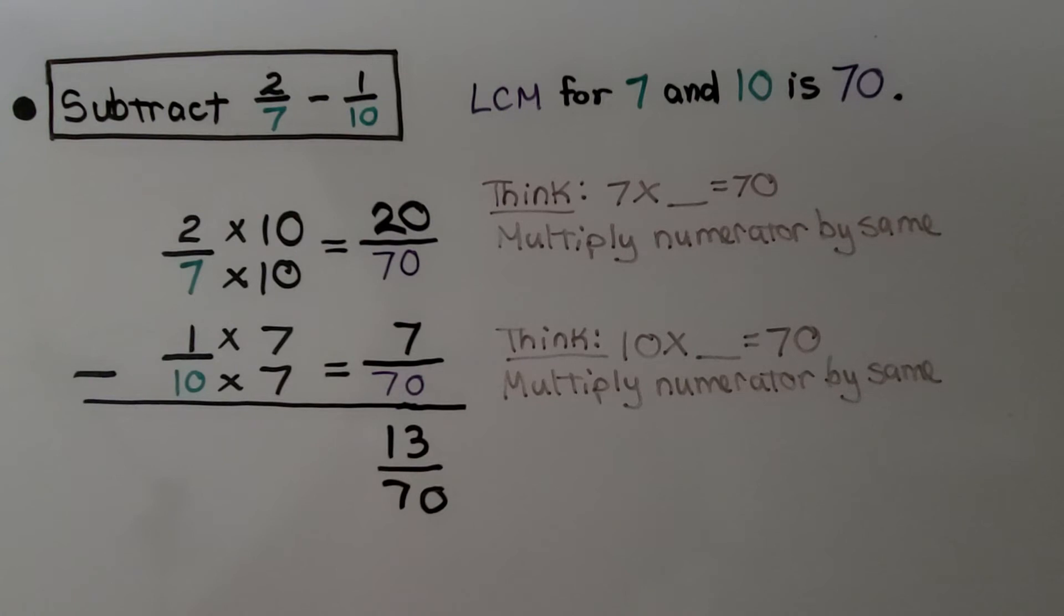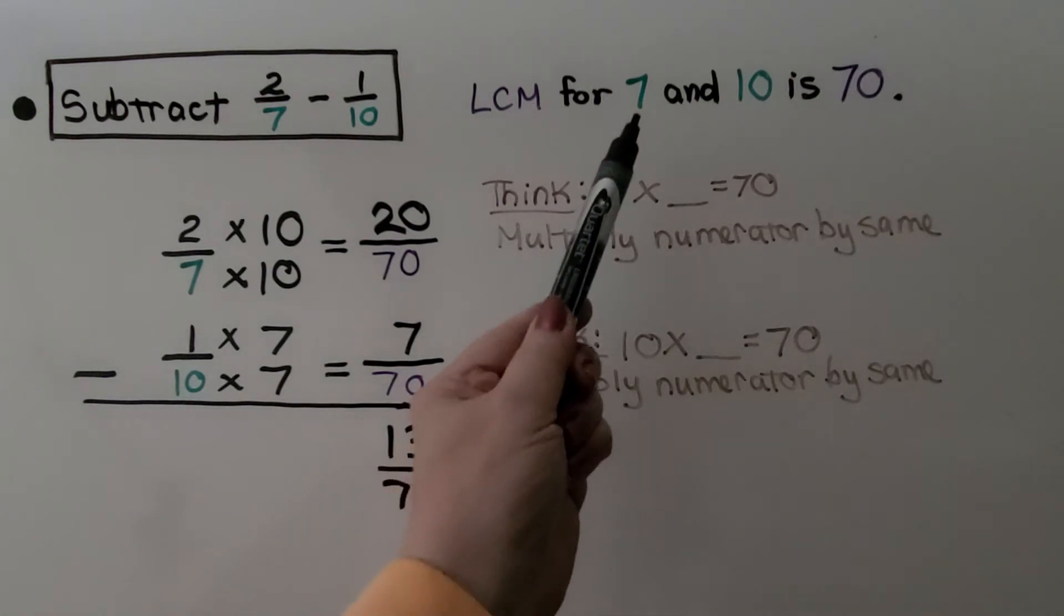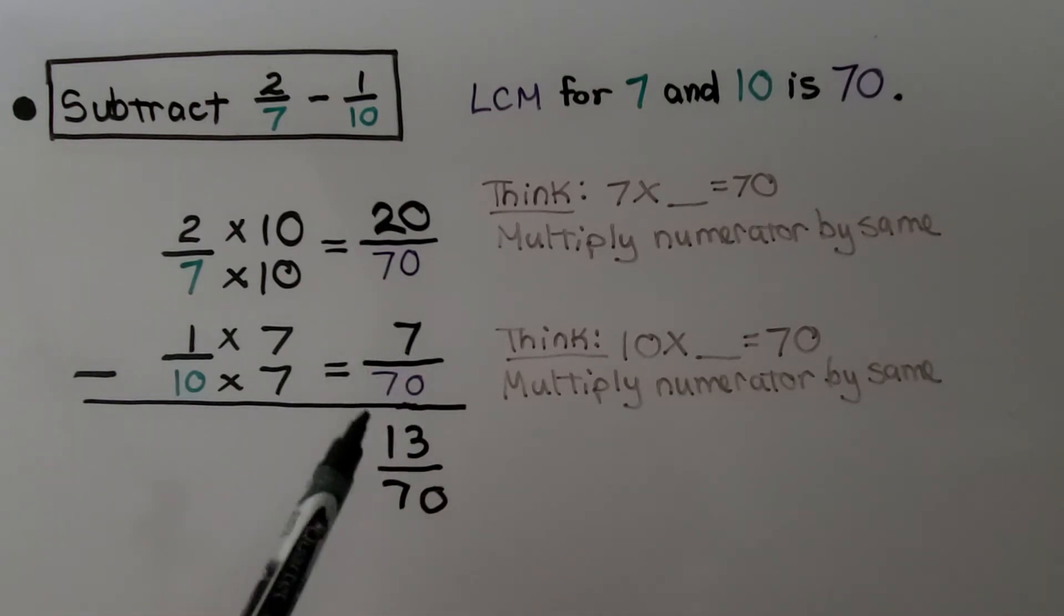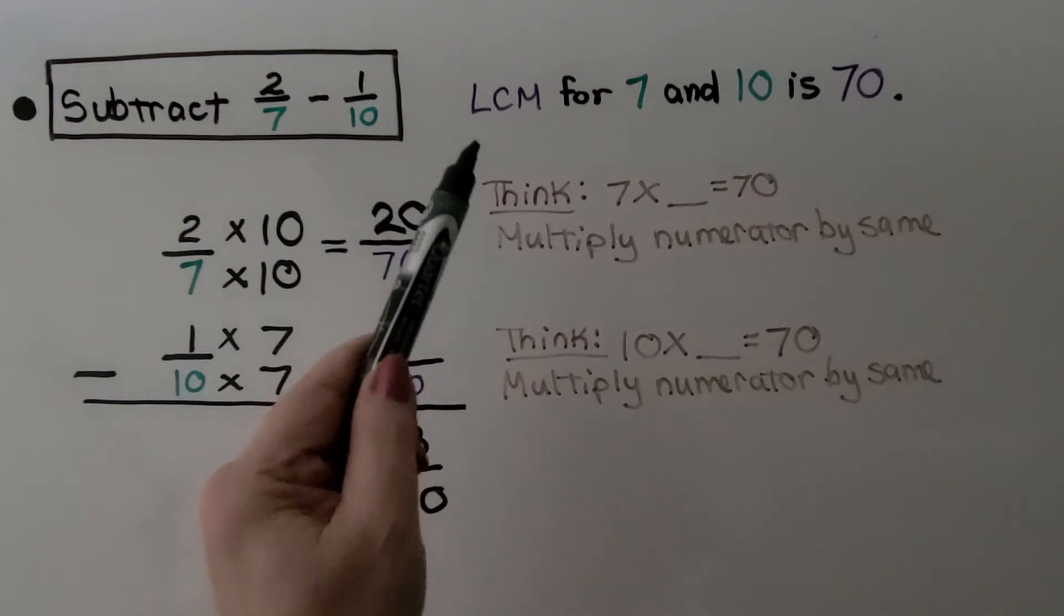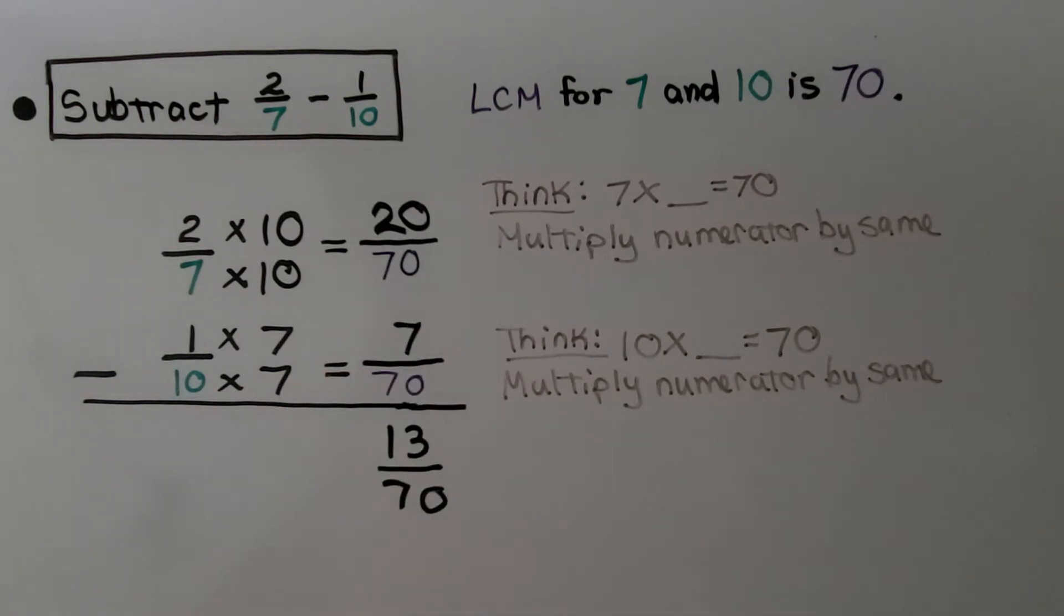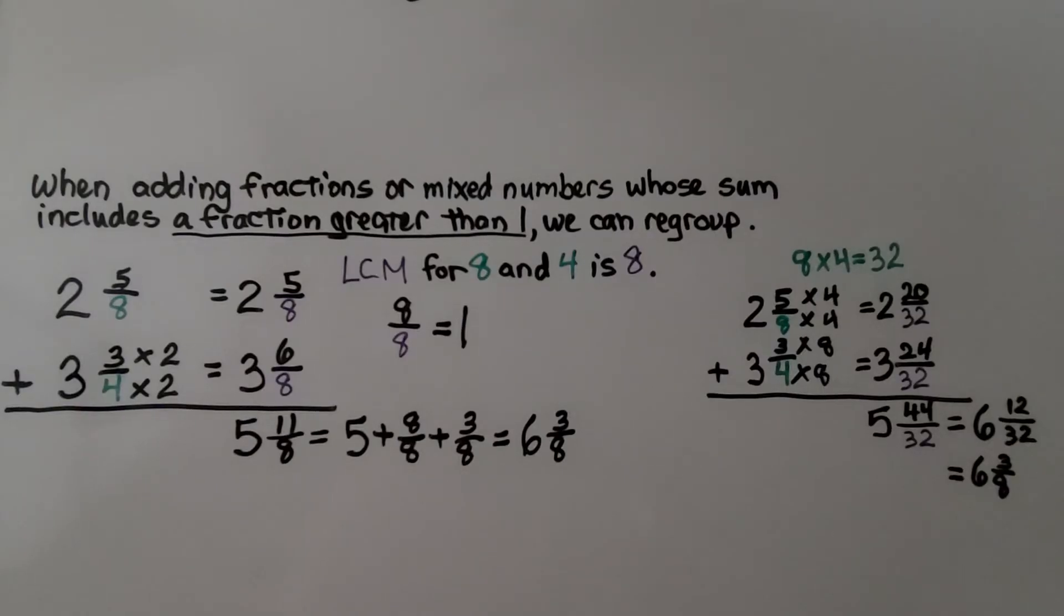Sometimes we can find the common factor by just multiplying the 7 times the 10 to get 70. But be careful doing this. It may not be the least common multiple, and you may end up having to simplify. When adding fractions or mixed numbers whose sum includes a fraction greater than 1, we can regroup.